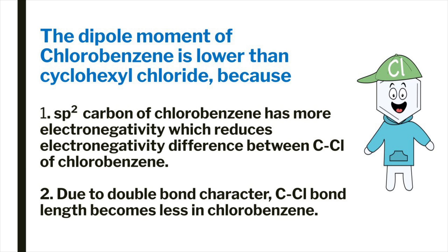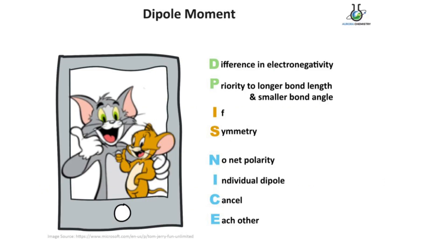Due to both these reasons, the dipole moment of cyclohexyl chloride is greater, and chlorobenzene has less dipole moment compared to cyclohexyl chloride. Remember the mnemonic DP IS NICE: Difference in electronegativity, Priority to longer bond length and smaller bond angle, Individual dipoles cancel each other due to Symmetry — No net polarity. If you remember this mnemonic, you can solve any dipole moment question easily. Thanks for watching.